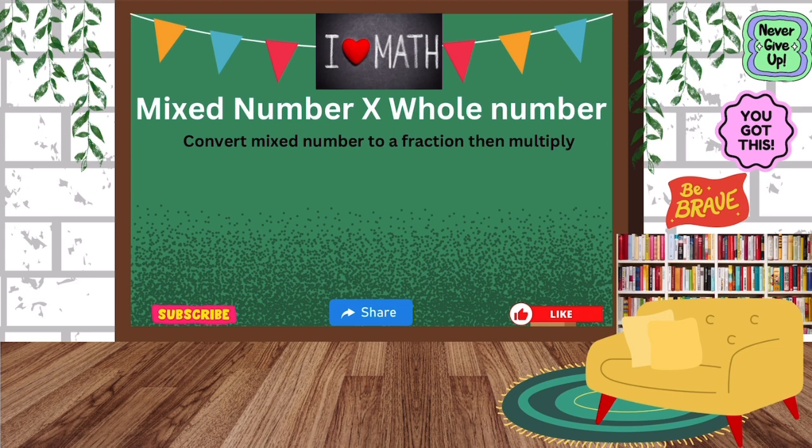So let's do another one. Let's do 6 and 1 fifth. 6 and 1 fifth times 10. So convert that, convert the mixed number by multiplying the denominator and the whole number. So 6 times 5 is 30. Add the numerator, which is 31. Denominator stays the same. That's how we got 31 fifths.